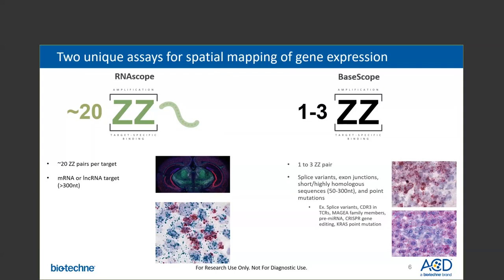The BaseScope platform uses probes that are designed in one to three ZZ probe pairs. For both the RNAscope and BaseScope assays, the bottom of the Zs are designed to bind to target-specific regions, while the top of the Zs are designed to bind to the respective assay amplification tree. The top and bottom of the Zs are linked by a spacer. In its entirety, the double-Z probe design allows for single-molecule detection.